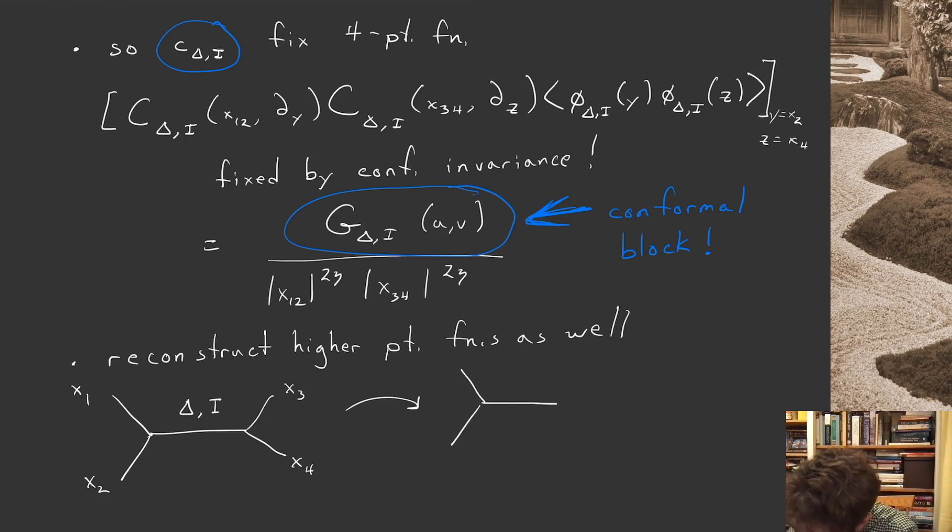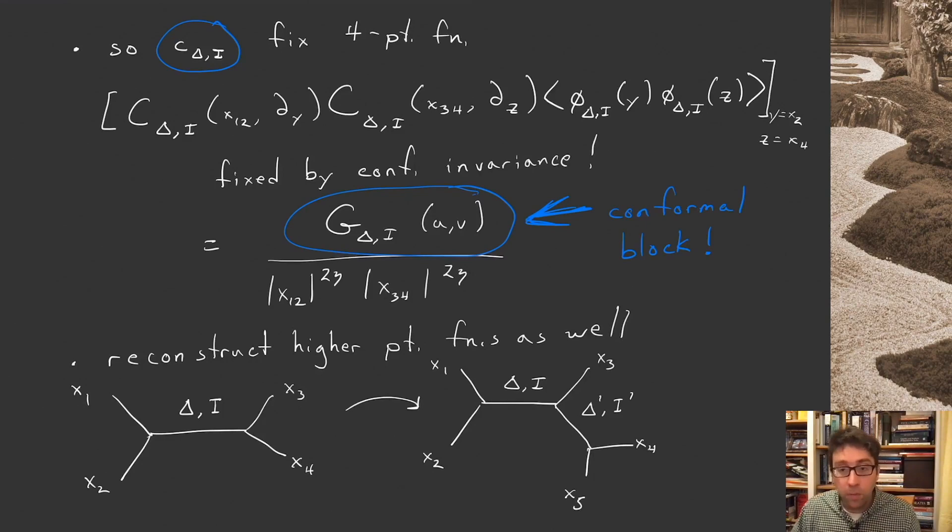If we want to think about higher point functions, we just have to dress this up a little bit more. Like if we want to do a five-point function, here's x1, x2, x3, x4, and x5. We just break this up sequentially. So we have a sum over this channel, delta and i, and then we can bring the operators in that intermediate channel close to x3 and x4 and x5 together. This would be some double sum over the operators in the two internal lines. And again, it's all fixed by three-point functions. So if you know the three-point functions, you can fix the five-point function, and the six-point function, and the seven-point function, and so on.